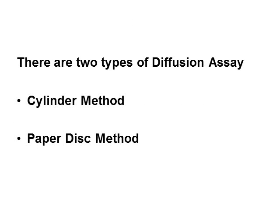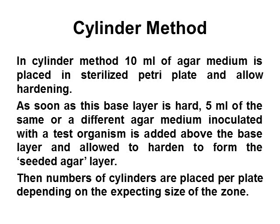There are two types of diffusion assay: the cylinder method and the paper disc method. In the cylinder method, 10 ml of molten agar is poured in a sterile petri plate. As soon as this base layer is hard, 5 ml of the same or a different agar medium inoculated with a test organism is added above the base layer and allowed to harden to form the seeded agar layer. Then, a number of cylinders are placed per plate depending on the expected size of the zone.